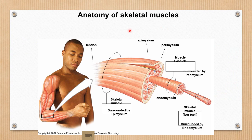Looking at the anatomy of the skeletal muscle, the muscle tissue is composed of multiple muscle fibers. A single muscle cell, which is multinucleated, is known as a muscle fiber. These muscle fibers are grouped together making a bundle known as a muscle fascicle. Multiple muscle fascicles together make the muscle tissue. Each muscle fiber is surrounded by a connective tissue layer known as endomysium.